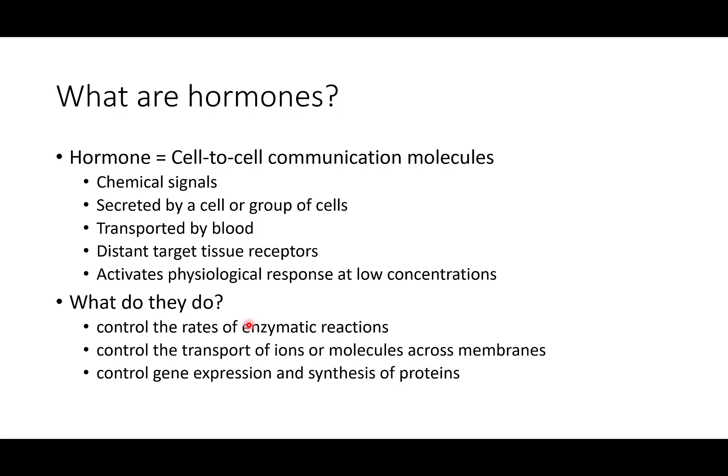Insulin is a hormone. When it binds to receptors on target tissues, it will activate GLUT4 and GLUT2 transporters. Lastly, hormones can control gene expression and synthesis of proteins — they can actually tell cells to start producing a particular protein.